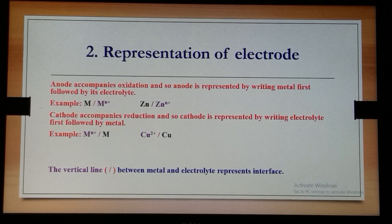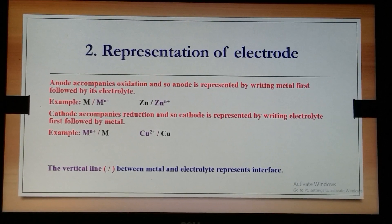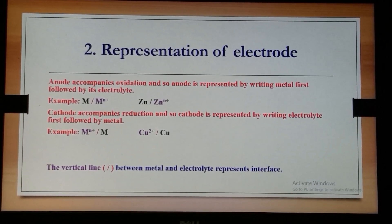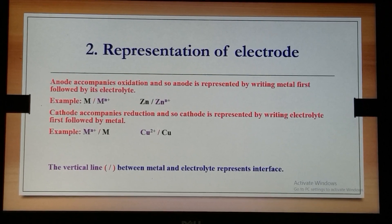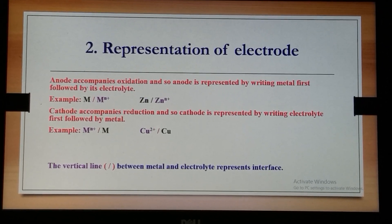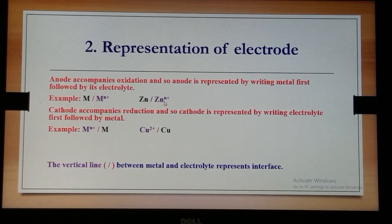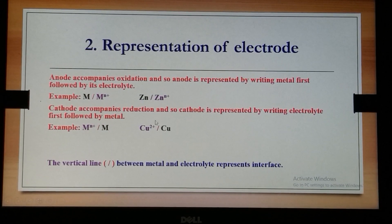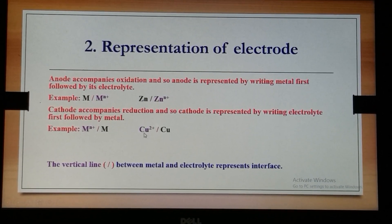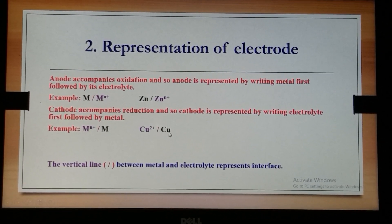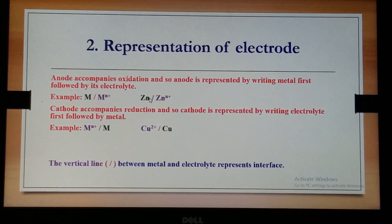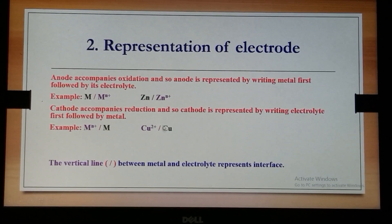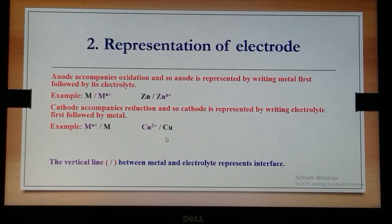As explained, the anode is represented by writing the metal first followed by the metal ions — with zinc as the example, zinc is written first followed by zinc ions. Similarly for writing the cathode, the copper ions are written first followed by copper. The vertical line in between is the interface.